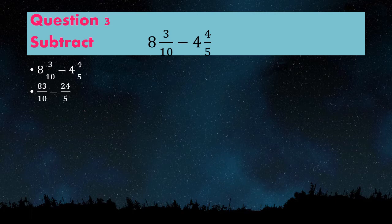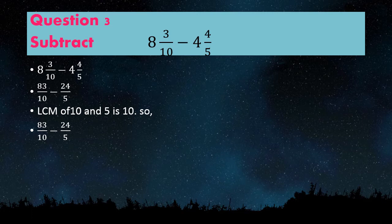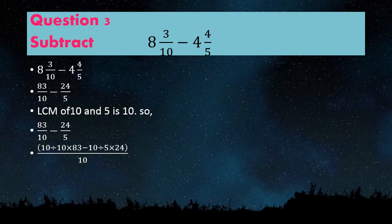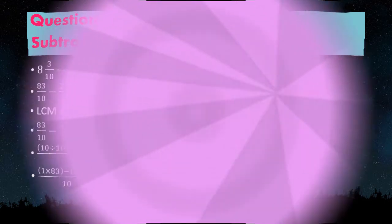Taking the LCM of the denominators 10 and 5, we get 10. Keeping 10 as the common denominator and following the multiplication and division process: 10 divided by 10 multiplied by 83, minus 10 divided by 5 multiplied by 24. On solving further, we get 83 minus 48 divided by 10.